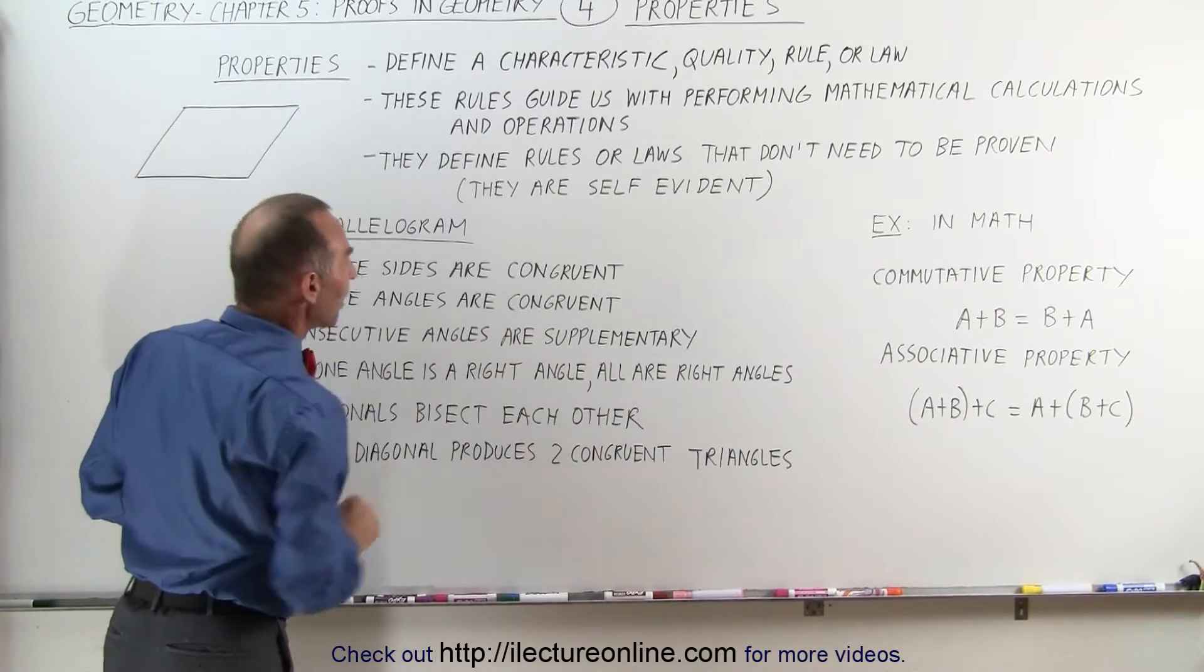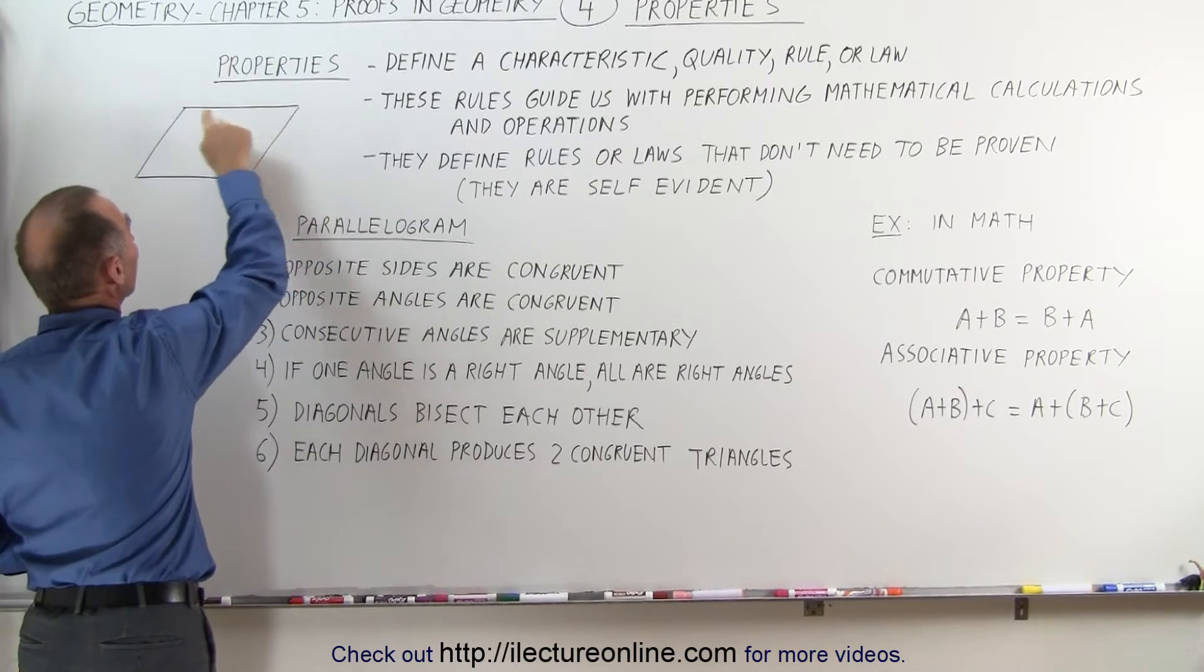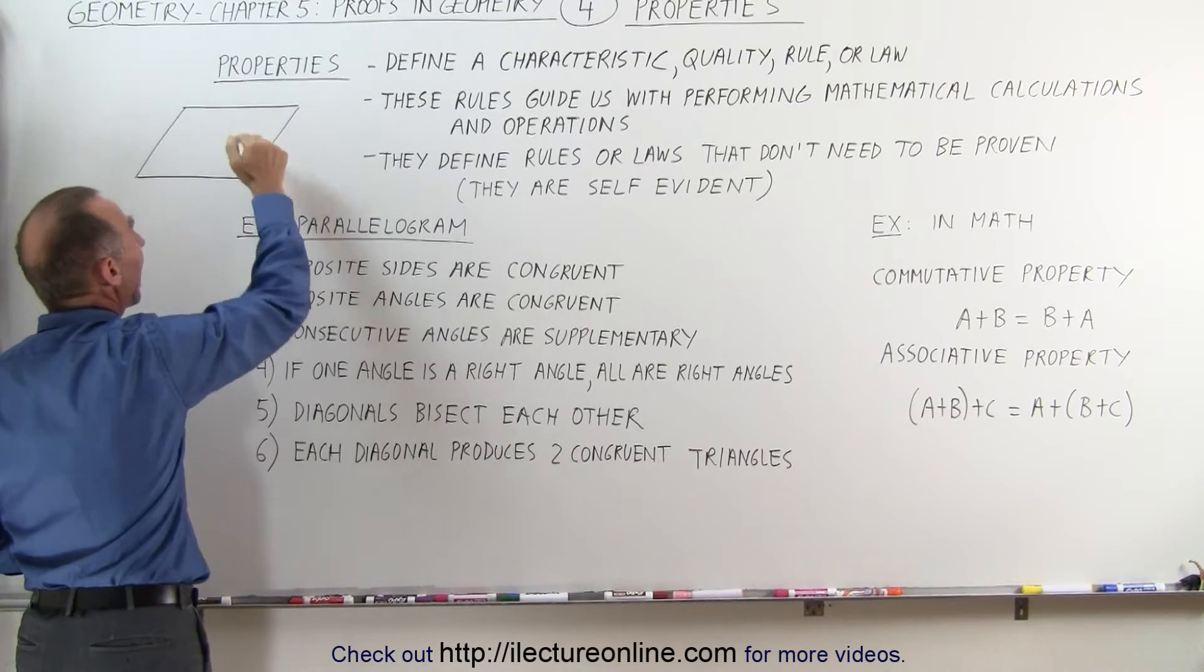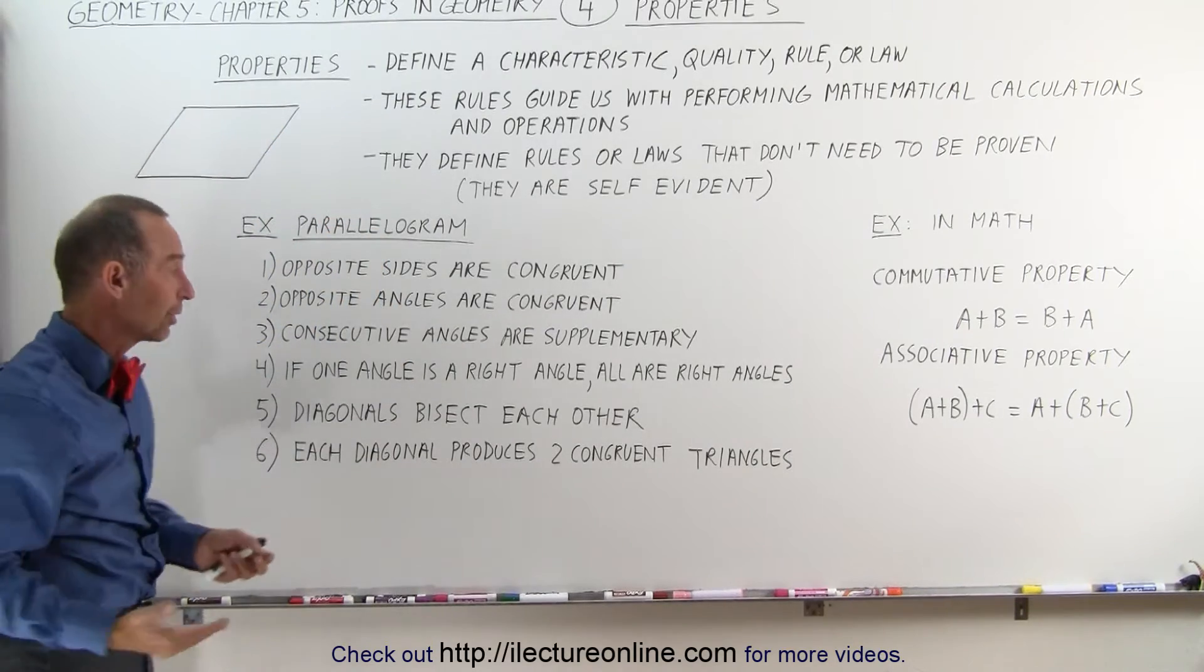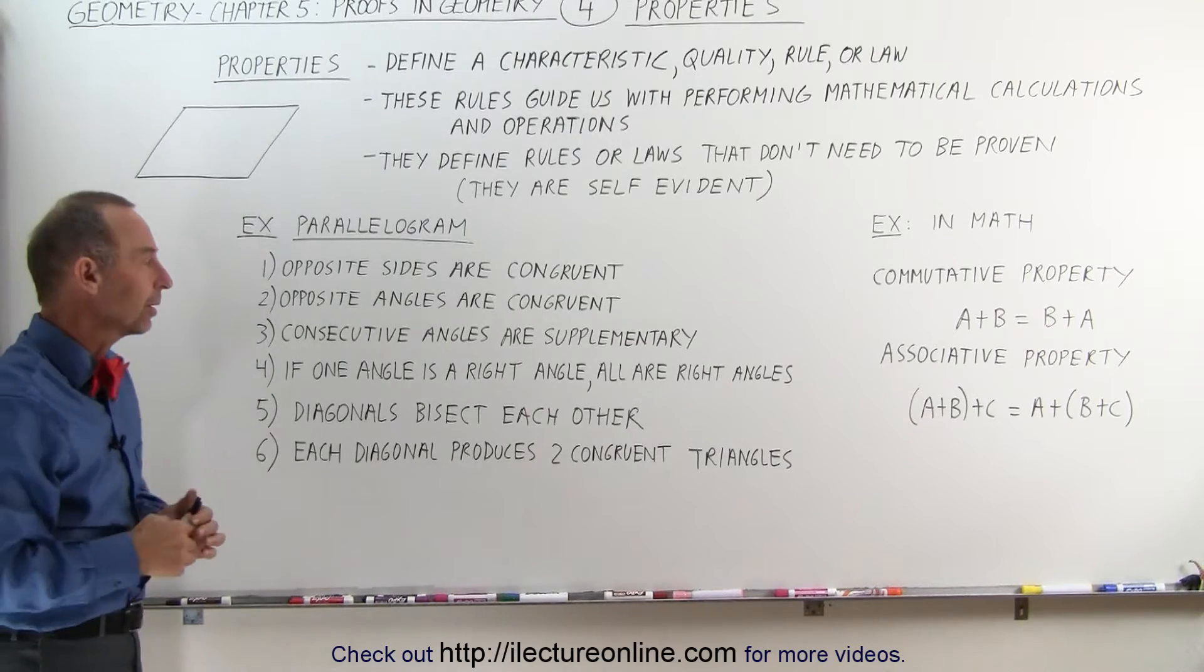Consecutive angles are supplementary. Here's one angle. Here's a consecutive angle. Add those two angles together, they add up to 180 degrees. Therefore, they're supplementary. That is a property of a parallelogram.